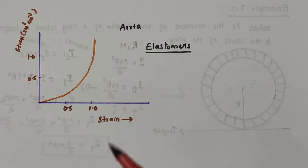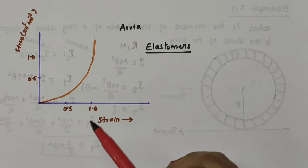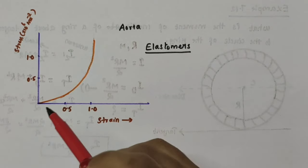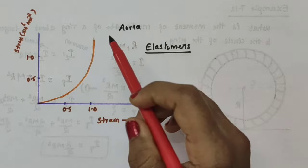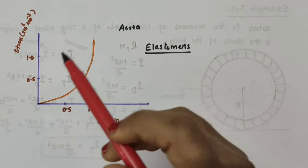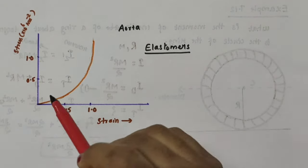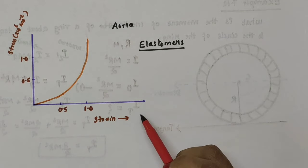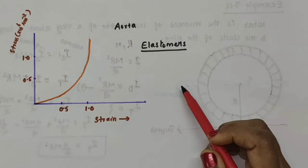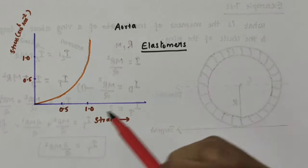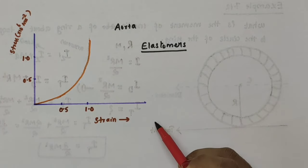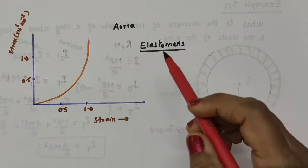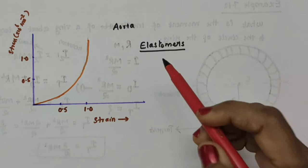We have discussed the typical stress-strain curve for a metal. The stress-strain behavior varies from material to material. This figure shows the stress-strain curve for the elastic tissue of the aorta, which is the large tube carrying blood from the heart. It is clear from the graph that this tissue does not obey Hooke's law, but its elastic region is very large and there is no well-defined plastic region. Substances like rubber and the tissue of aorta, which can be stretched to cause large strains, are called elastomers. Rubber can be pulled to several times its original length and still returns to its original shape — elastomers exhibit rubber-like elastic properties.